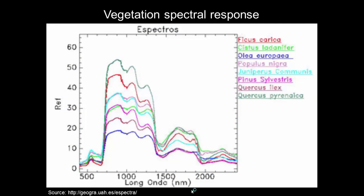The same applies to different tree or shrub species. Again, these species present similar spectral curves, but slight differences in the shape of the spectra can be used for the identification of vegetation types. This is the basis for mapping biodiversity and species distribution, for example.